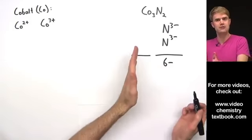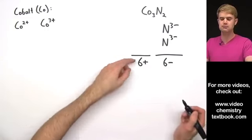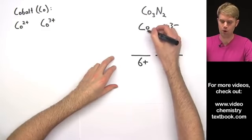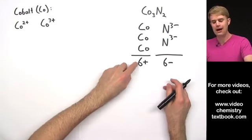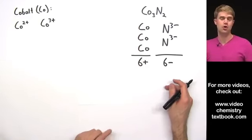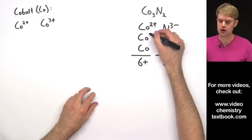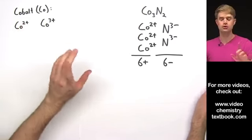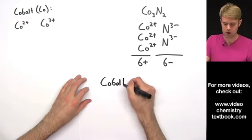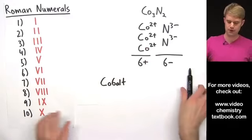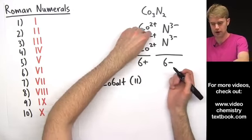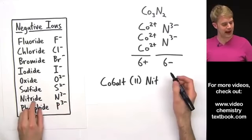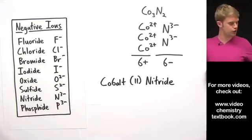The positive and negative charge has to balance out, so we have a total of 6+ on the cobalt side. For cobalt, Co, we have three of them. How do we divide up this 6+ amongst three cobalts? We do it so that each one has 2+ of charge. So cobalt has a charge of 2+ in this compound. We'll call it cobalt(II). Finally, N³⁻ is called nitride — the neutral element is nitrogen and we add -ide — so the full name is cobalt(II) nitride.